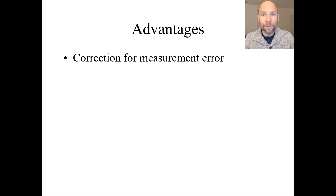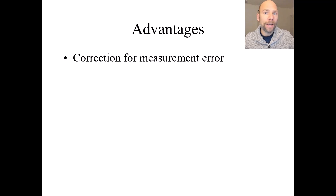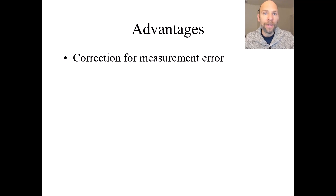Some of the variability between people in the scores can simply be explained by random measurement error. Therefore, one of our goals is to separate measurement error variance from true score variance — meaning true differences between people. We are really interested in determining the true variance in the scores. Structural equation modeling and factor analysis allows us to do this by introducing latent factors that are by definition free of measurement error.